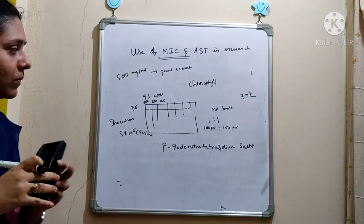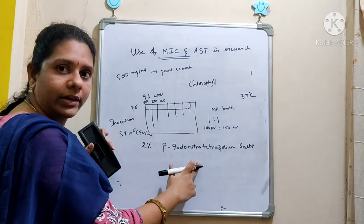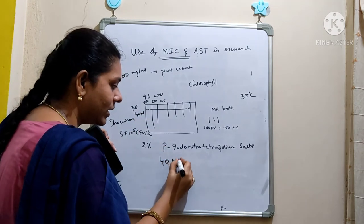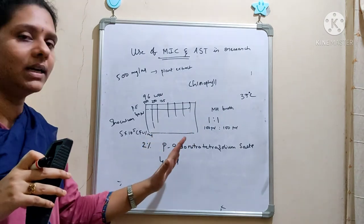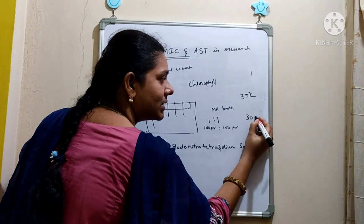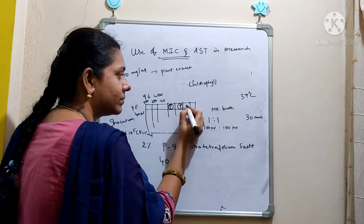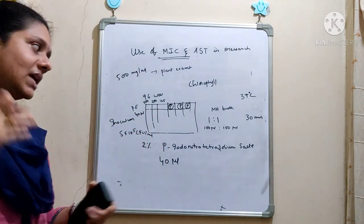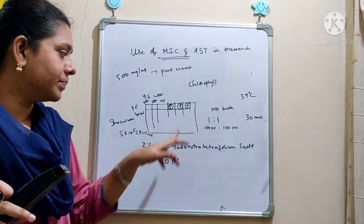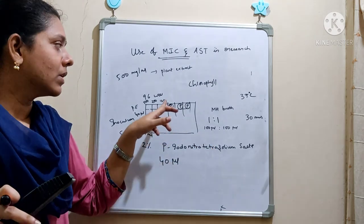This is an indicator dye. After the process of incubation, remove the plate and prepare a 2% p-Iodonitrotetrazolium dye solution and add 40 microliters to all the wells. Since it is an indicator dye, it will usually be colorless. But after a further 30 minutes of incubation, if bacteria are present in any well, the color of the media will change to pink. This dye is used to detect the presence or absence of bacterial growth — if bacteria are present, the color changes from colorless to pink.